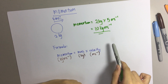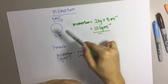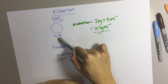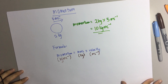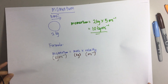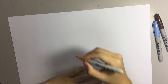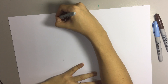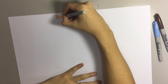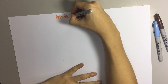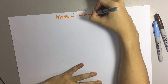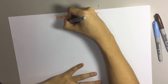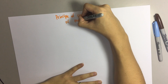So every single object that is moving and has mass will have momentum. Another important thing about momentum is that you need to remember this principle — we call it the principle of conservation of momentum.